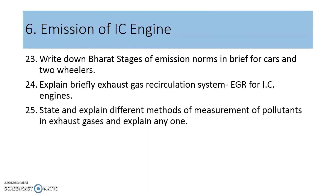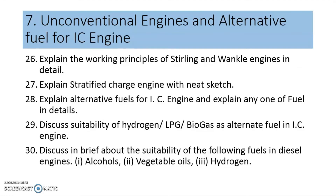Unit number six is the emissions of IC engines. The question from the emission of IC engines is: write down the Bharat stages of emission norms in brief for cars and two-wheelers — you need to write about the different Bharat stages like BS5, BS6, and so on. The next question is: explain briefly the exhaust gas recirculation system, that is EGR, for IC engines. Question 25: state and explain different methods of measurement of pollution in exhaust gases and explain any one. In our syllabus there are various instruments to measure pollutants — like NDIR, FID, and CLA. You need to explain any one in detail along with a neat sketch.